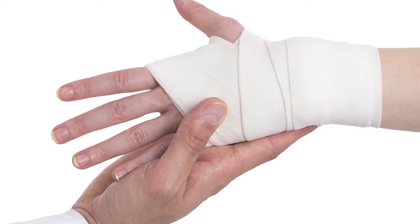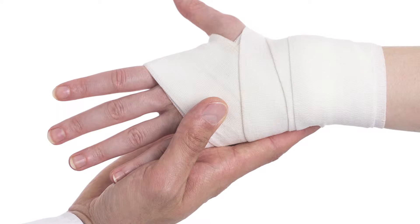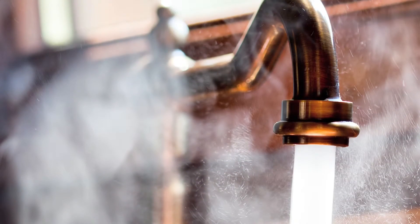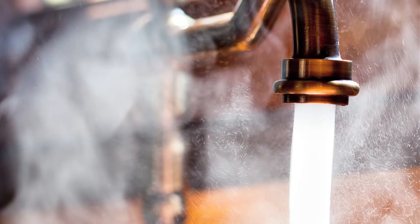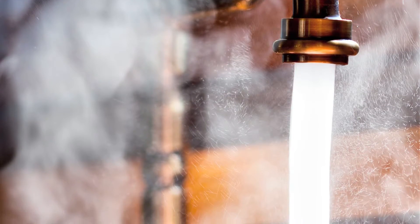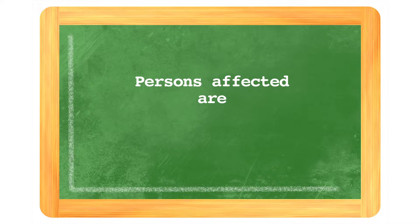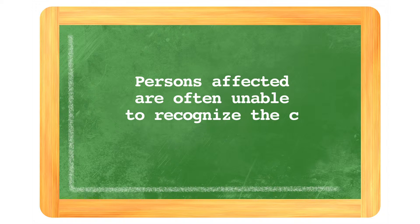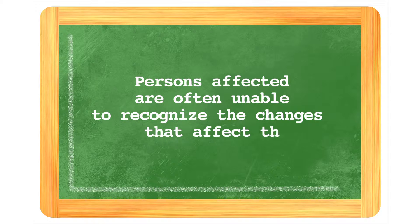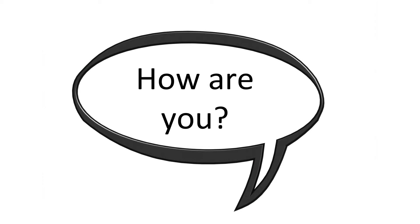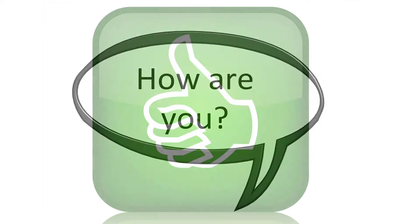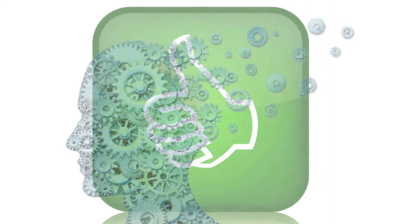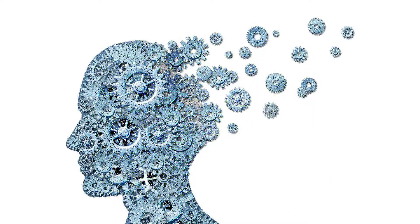The risk of injury increases because affected individuals have problems perceiving pain. For example, they might misjudge the temperature of water and burn themselves. Persons affected with Huntington's are also often unable to recognize changes that affect them physically or that affect their behavior. For example, when asked how they're doing, they'll answer that they are fine, despite the obvious symptoms that they're presenting. This is explained by a disturbance in the brain rather than denial.